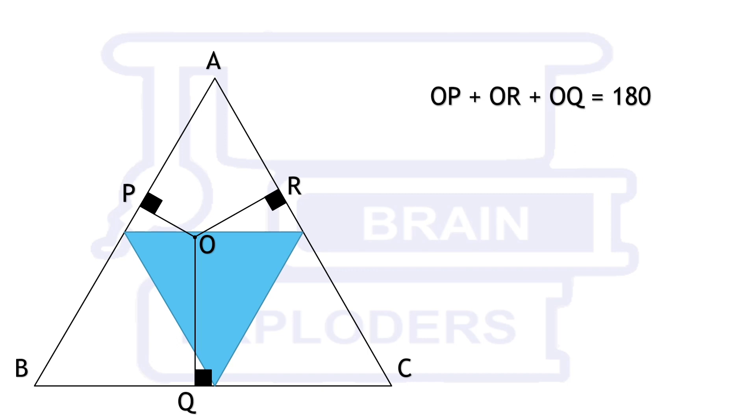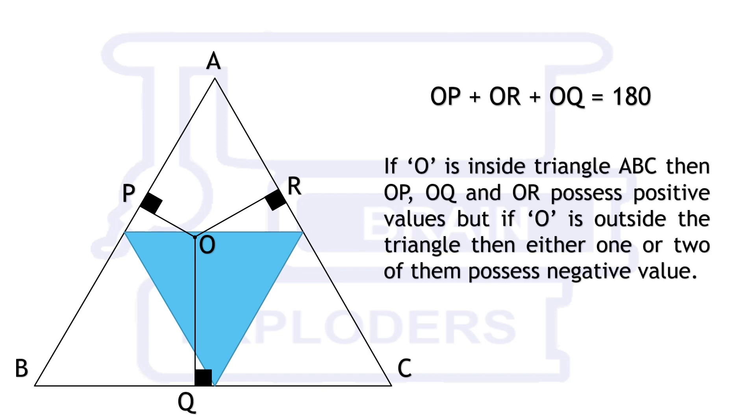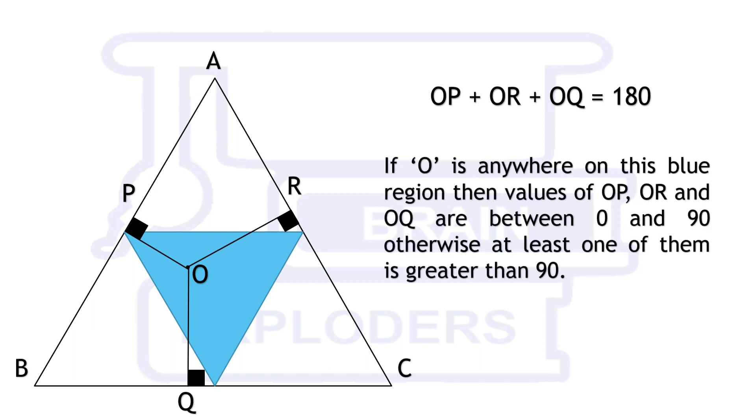If O is inside triangle ABC then OP, OQ, and OR possess positive values, but if O is outside the triangle then either one or two of them possess negative values. If O is anywhere on this blue region, then values of OP, OR, and OQ are between 0 and 90, otherwise at least one of them is greater than 90.